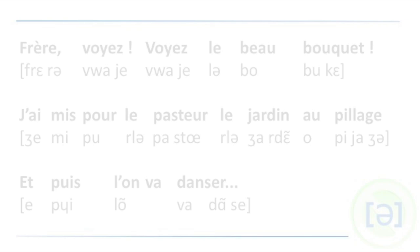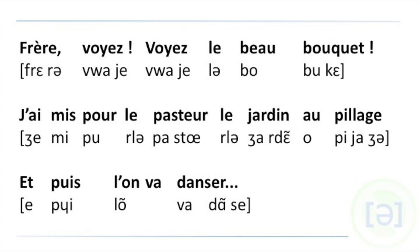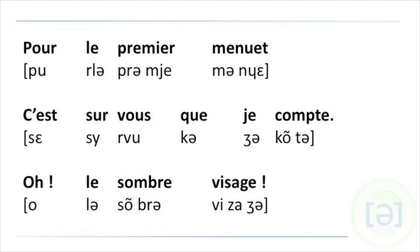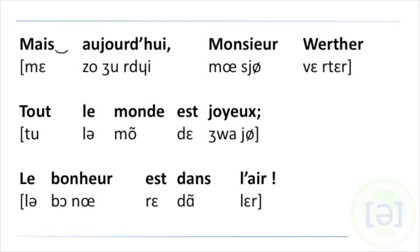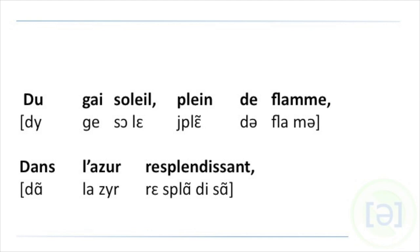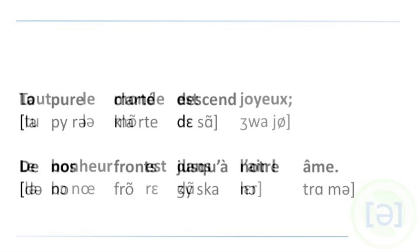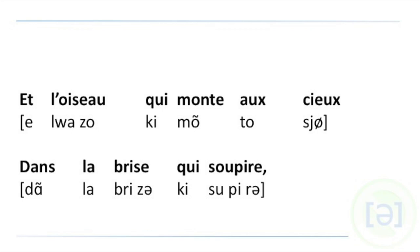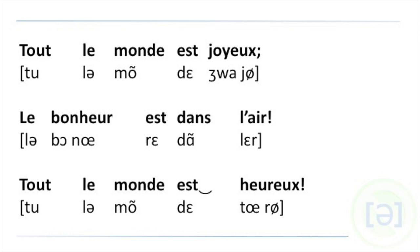Frère, voyez, voyez le beau bouquet. J'ai mis pour le pasteur le jardin au pillage. Et puis on va danser. Pour le premier menuet, c'est sur vous que je compte. Oh, le sombre visage. Mais aujourd'hui, Monsieur Werther, tout le monde est joyeux. Le bonheur est dans l'air. Du gai soleil plein de flammes dans l'azur resplendissant, la pure clarté descend de nos fronts jusqu'à notre âme. Tout le monde est joyeux. Le bonheur est dans l'air. Et l'oiseau qui monte aux cieux dans la brise qui soupire est revenu pour nous dire que Dieu permet d'être heureux. Tout le monde est joyeux. Le bonheur est dans l'air. Tout le monde est heureux.